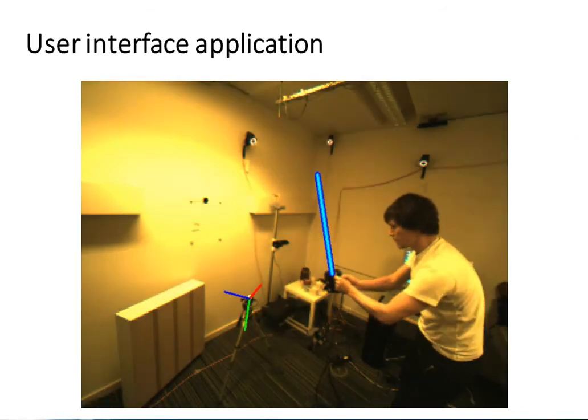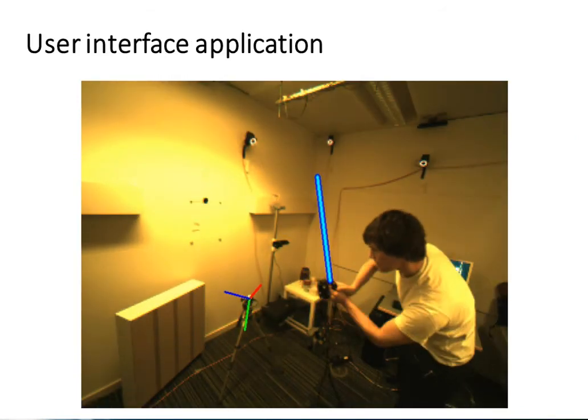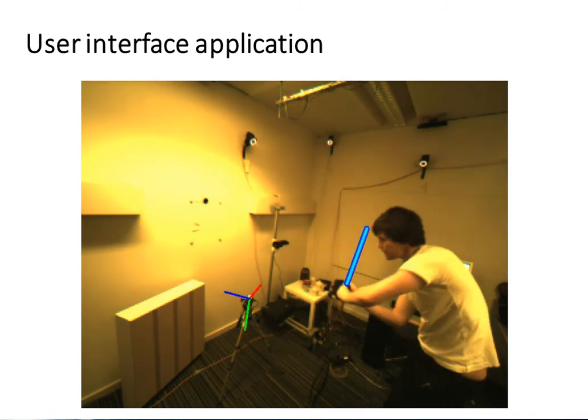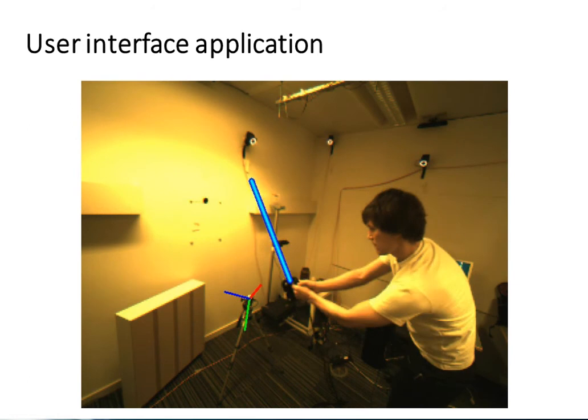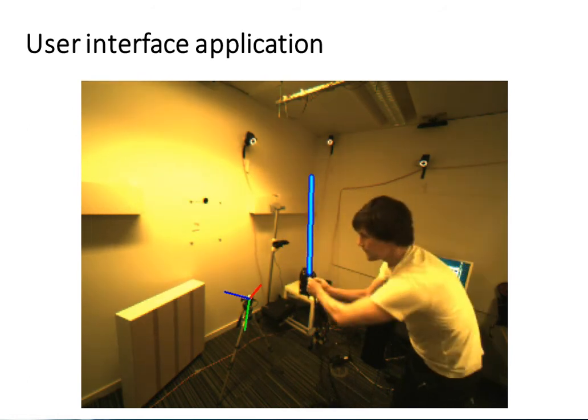This is an example of the tracker as a user interface device. The handheld emitter is augmented with a virtual lightsaber. As can be observed, translational and rotational accuracy are comparable to other lookup systems with a much simpler device.